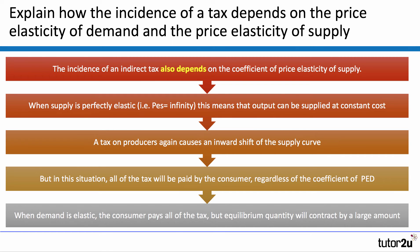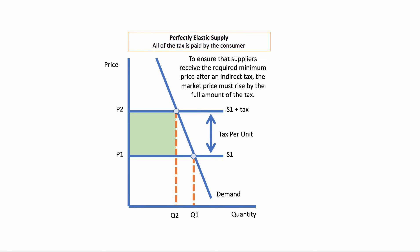But in this situation, all of the tax will be paid for by the consumer, and this is regardless of the coefficient of elasticity of demand. So even if demand is highly elastic — ordinarily that would mean the producer absorbs the tax — but if supply is perfectly elastic, the consumer pays all of the tax, although there'll be a big fall in the equilibrium quantity bought and sold. Here's a diagram showing a perfectly elastic supply curve. It doesn't matter what the elasticity of demand is, because all of the tax is paid for by the consumer. The producer is able to pass on the full amount of the tax.